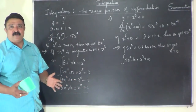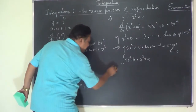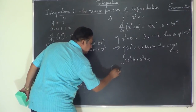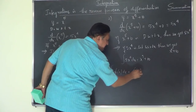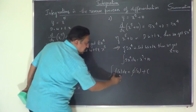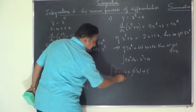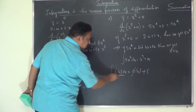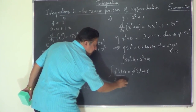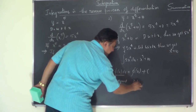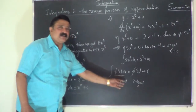So now you understand that integral f of x dx equals phi of x plus c — when f of x is integrated, we get phi of x. Here f of x, the function being integrated, is called the integrand. What we obtain after integration is called the integral, and the process of finding the integral from the integrand is called integration.